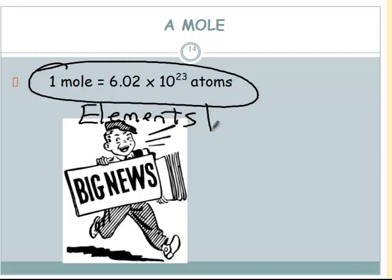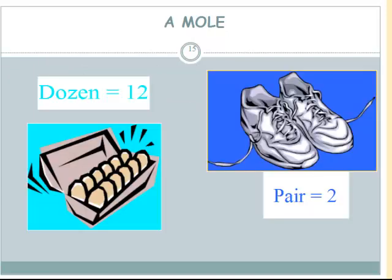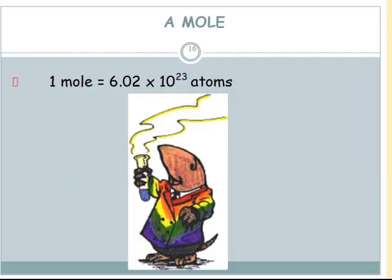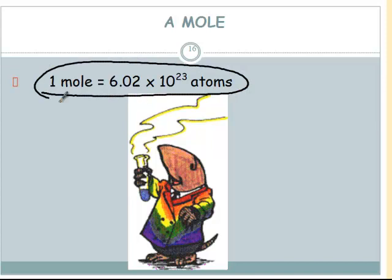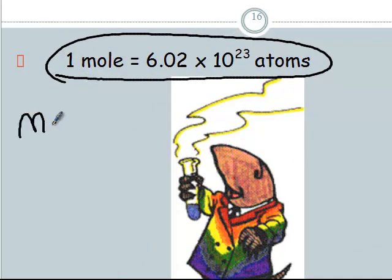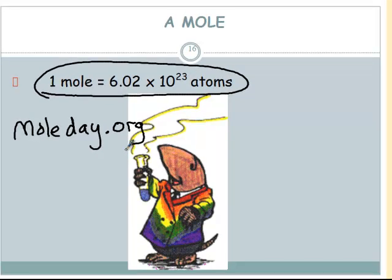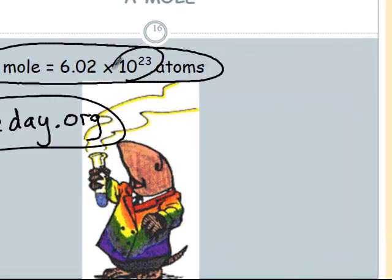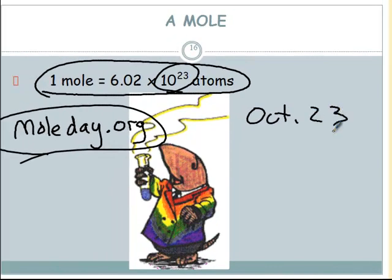When talking about elements from the periodic table, one mole equals Avogadro's number of atoms. There are all kinds of analogies: a dozen is 12, a pair is 2, a mole is 6.02 times 10 to the 23rd of something. You could have a mole of eggs, a mole of shoes, or a mole of oxygen atoms. This little character is called Burro de Mole, created by molday.org — they created Mole Day, based on 10 to the 23rd: the 10th month, October 23rd.